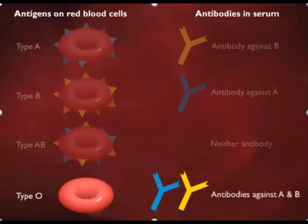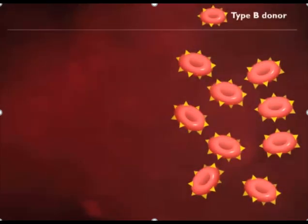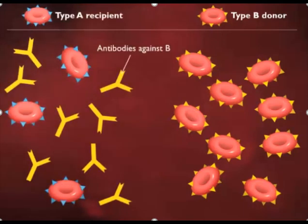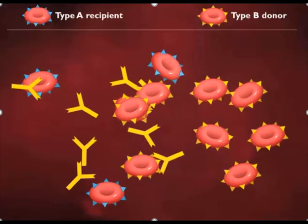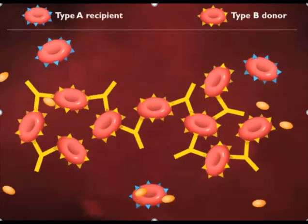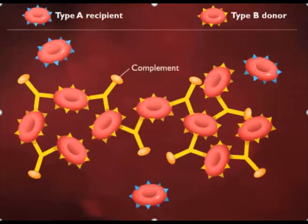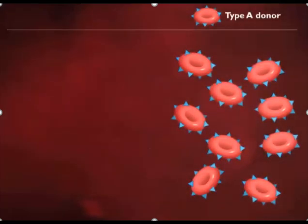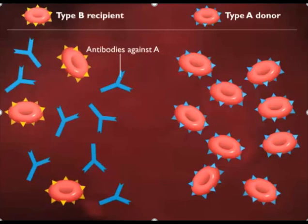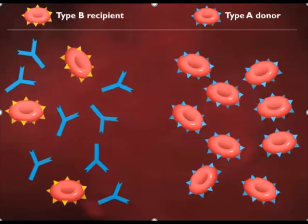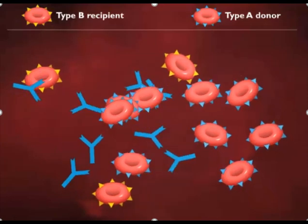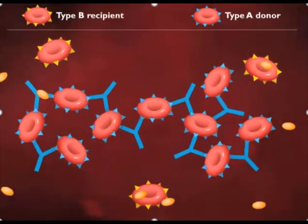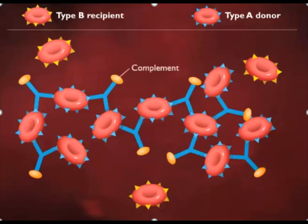The serum of Type B blood contains antibodies against Type A antigens, and Type O serum contains antibodies against both A and B antigens. If blood from a Type B person is transfused into a Type A person, the antibodies in the Type A blood react with the surface antigens on the incoming red blood cells, leading to complement fixation and cell lysis. Similarly, if Type A blood is transfused into a Type B person, antibodies in the Type B blood react with the incoming cells, also leading to complement fixation and lysis.